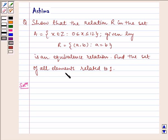Find the set of all elements related to 1. Now let us write the solution. Given to us is R equals (a,b) such that a equals b. Now A equals {0, 1, 2, ... 11, 12}.